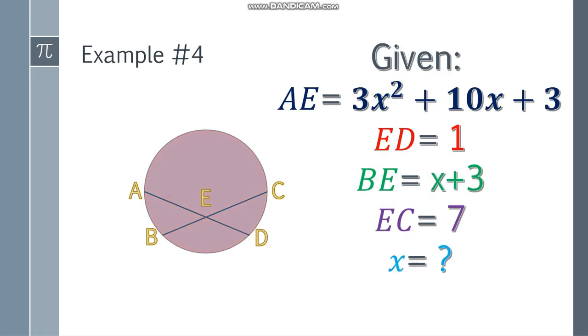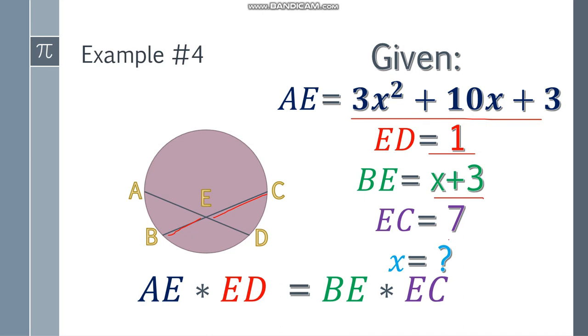Example number 4. What if the problem is more complicated like this one? We're given that AE is 3X squared plus 10X plus 3, this segment. And ED, this one is 1. BE is X plus 3, and EC is 7. I'm not going to put it here because the equation is quite long. So first things first, write the formula: AE times ED, so 3X squared, multiply by this, then BE times EC, X plus 3 times 7.